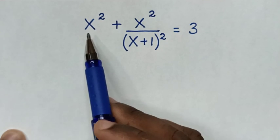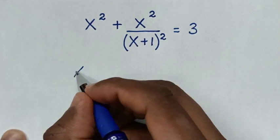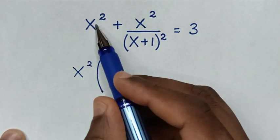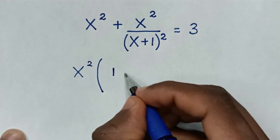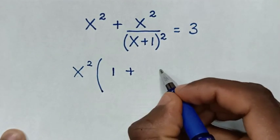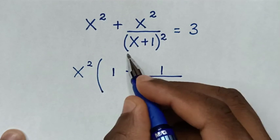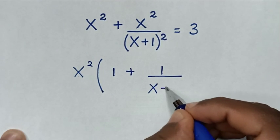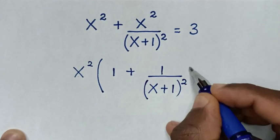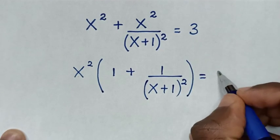From here, x squared is common. We take x squared out of the bracket, then x squared divided by x squared is 1, plus x squared divided by x squared is 1 over (x plus 1) squared, then bracket is equal to 3.